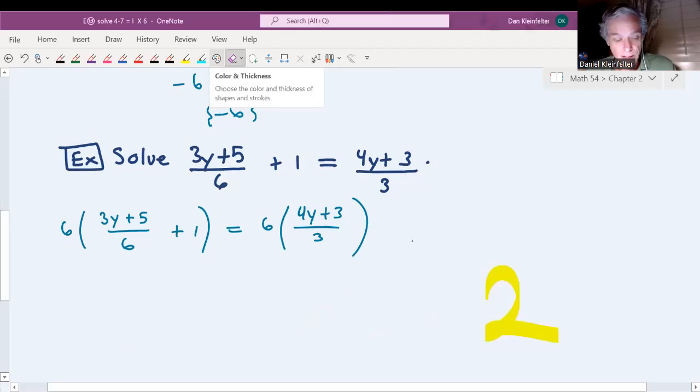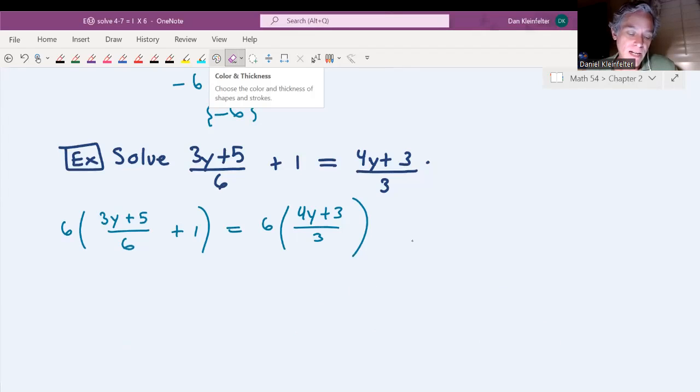So in this equation, we'd add 3y plus 5 over 6 plus 1 equaling 4y plus 3 over 3. And so the LCM of 6 and 3 is going to be 6. We're multiplying both sides by 6.